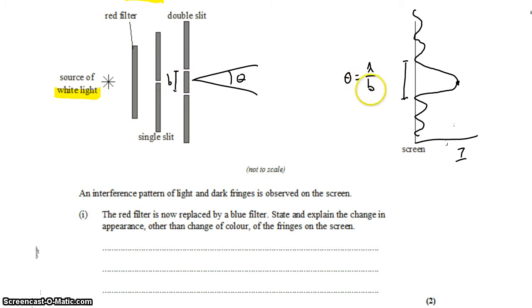b hasn't changed, but lambda has. The wavelength has gone down. Blue light is lower wavelength than red light. And since the wavelength has gone down, the separation between the gaps, the separation between the dark spots, will also go down.